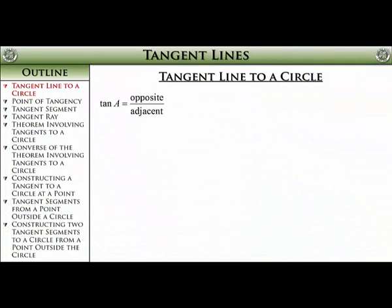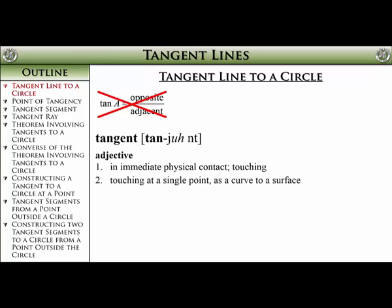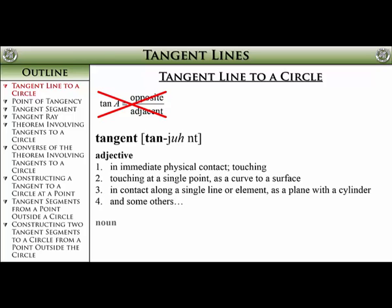Clearly we have used the word tangent before when we dealt with trigonometry. At that point we defined it as the ratio of the length of the opposite side to an angle over the length of the adjacent side to that same angle. That was lovely, but we aren't using that meaning for tangent in this section. There are actually a bunch of different meanings for tangent, more than I have listed here, and many of them have to do with math.